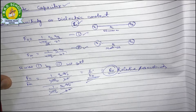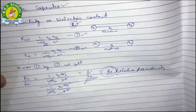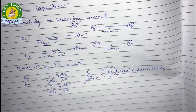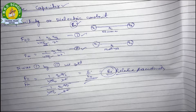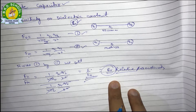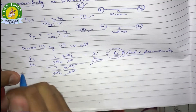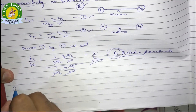This will be an important topic. Two important cases are: the capacitance of a capacitor when a conductor is held in between the plates, and when a dielectric slab is held in between. We have equations for both these cases.